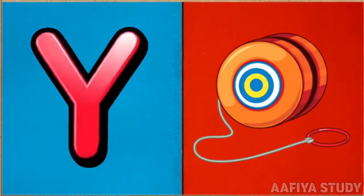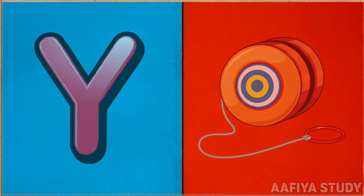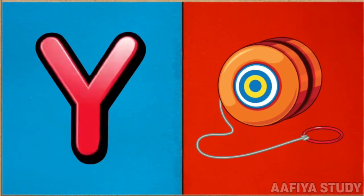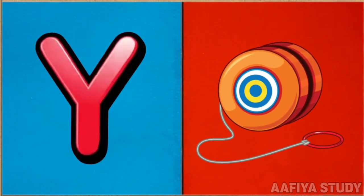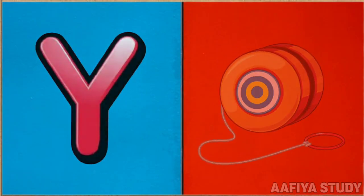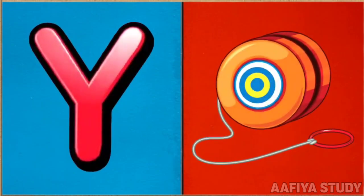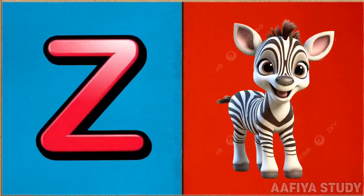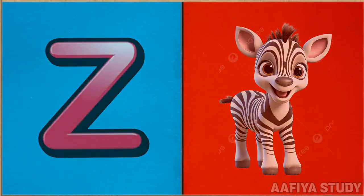Y is for yo-yo. Y-y-yo-yo, y-y-yo-yo. Z is for zebra.